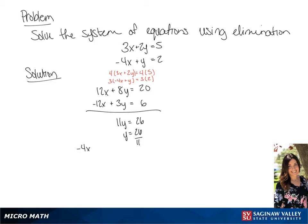If we plug 26 over 11 in for y in the second equation, we get negative 4x plus 26 over 11 equals 2. We get x equals 1 over 11. And our solution to the system of equations is 1 over 11 and 26 over 11.